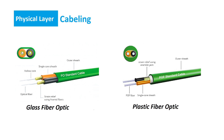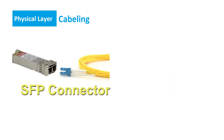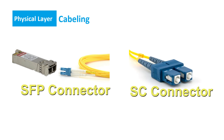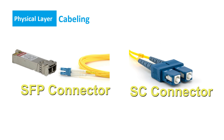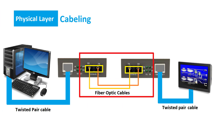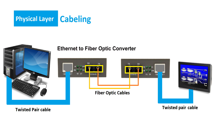Fiber optical cables use glass or plastic fiber optic cables as a medium for light pulses to travel to transmit data. This allows Ethernet to operate at higher distances and at a faster rate. Fiber optic cables use several types of connectors, the most common being SFP and SC. To use fiber optic in an Ethernet network, you need an Ethernet-to-fiber converter to take advantage of higher speeds and greater distances, which are not possible with twisted pair copper cables.